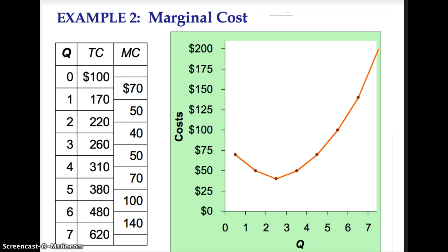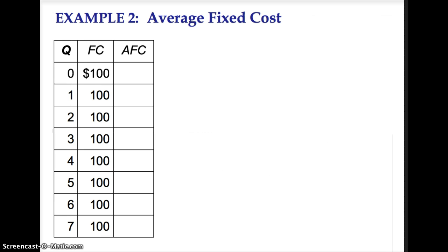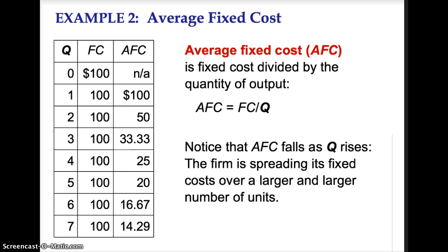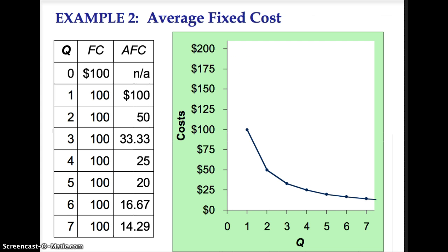Next is average fixed cost. Average fixed cost is fixed cost divided by quantity. Since we cannot divide by 0, there is no possible answer for AFC at 0 quantity. I suggest pausing the lecture and calculating average fixed cost on your own. Average fixed costs start at $100 and decrease to $14.29. On a graph, the AFC curve starts off high and gets closer and closer to the horizontal axis.